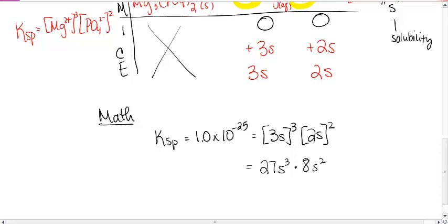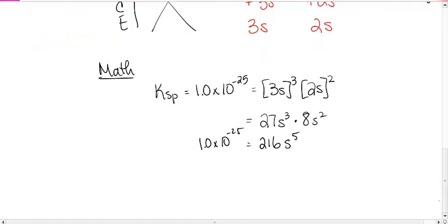I've got my calculator. You should have yours, right? You're going to make me do all the work. Okay, so 27 times 8, because I have no idea what that is, is equal to 216S to the 5th is equal to 1.0 times 10 to the minus 25. We're going to go ahead and solve for S. So, 1 times 10 to the minus 25 divided by 216 is 4.63 times 10 to the minus 28 is equal to S to the 5th. Holy moly.